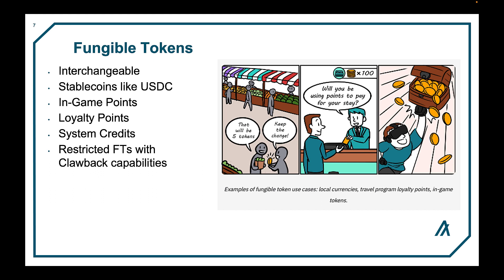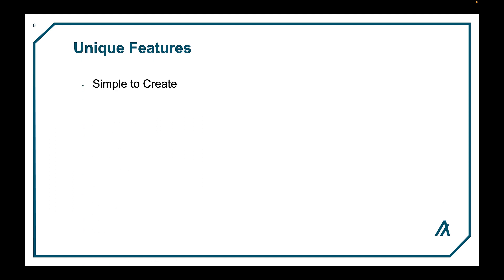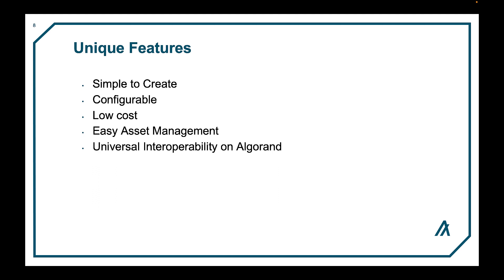Restricted fungible tokens with clawback capabilities can be used by securities or government-issued fiat, for example. Creating an NFT or FT in Algorand is very simple and can be done using an ASA. The type of token you are creating will be determined by how you configure the ASA. Layer 1 ASAs are low-cost to execute due to Algorand's minimal transaction fees. They provide easy and simple asset issuance and management for developers and enterprises, with universal interoperability of all assets issued on the Algorand blockchain, and can be created within seconds.